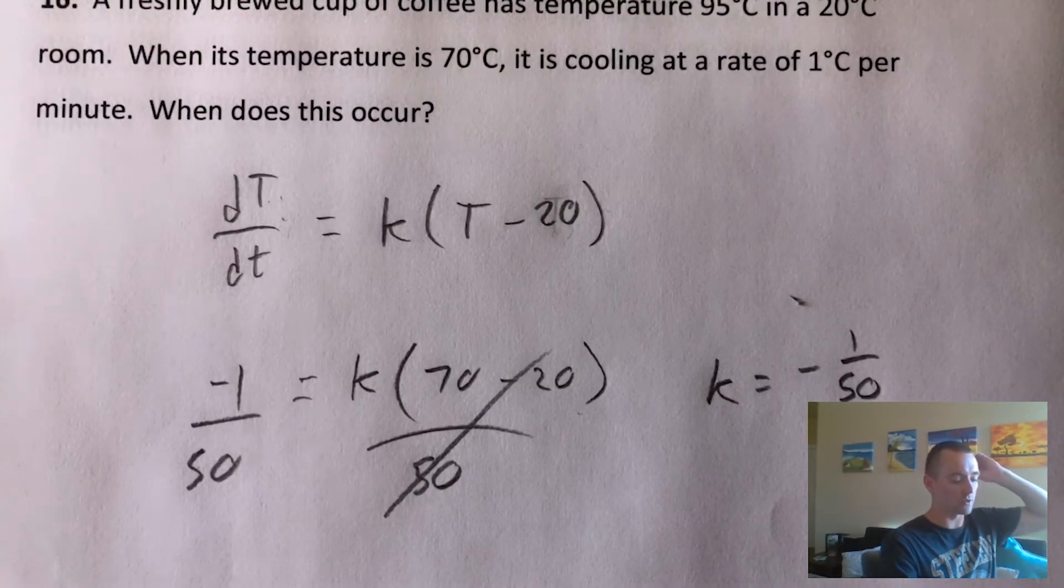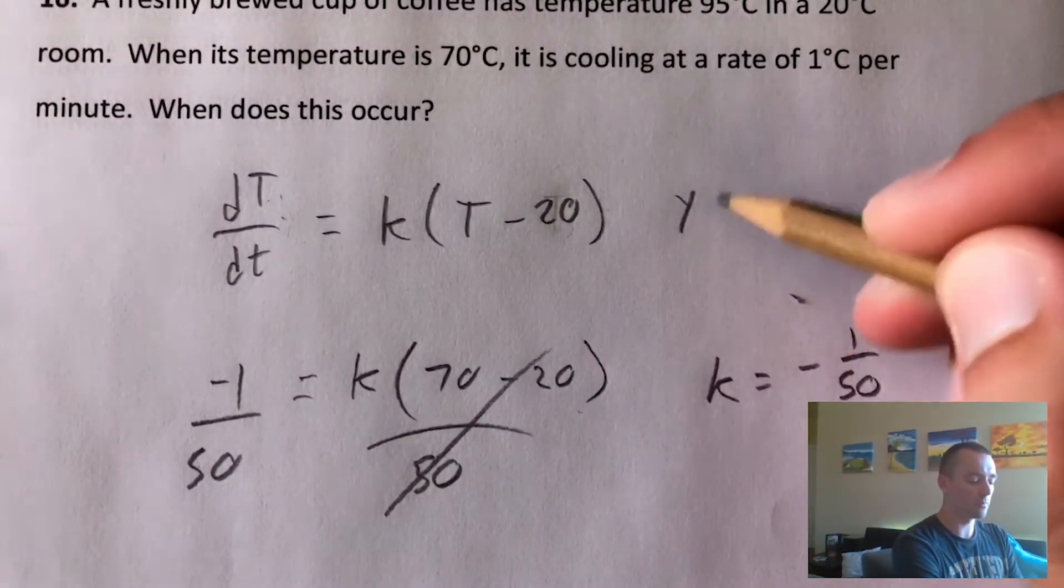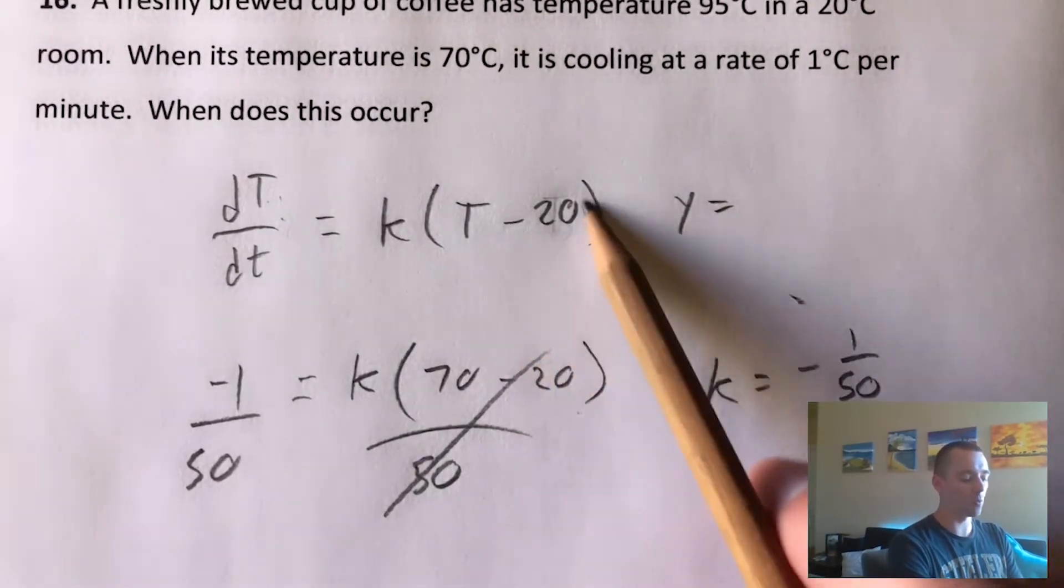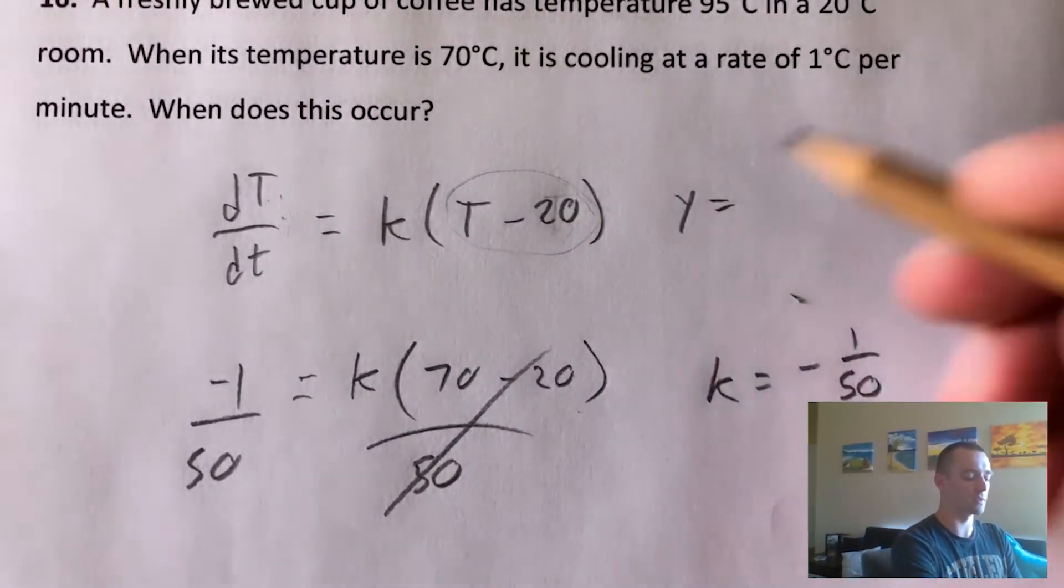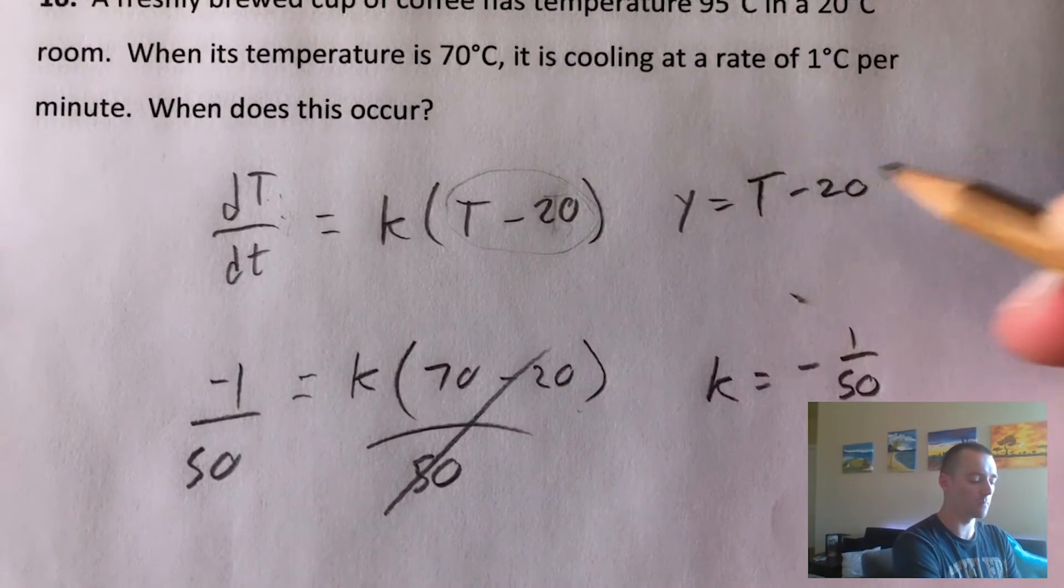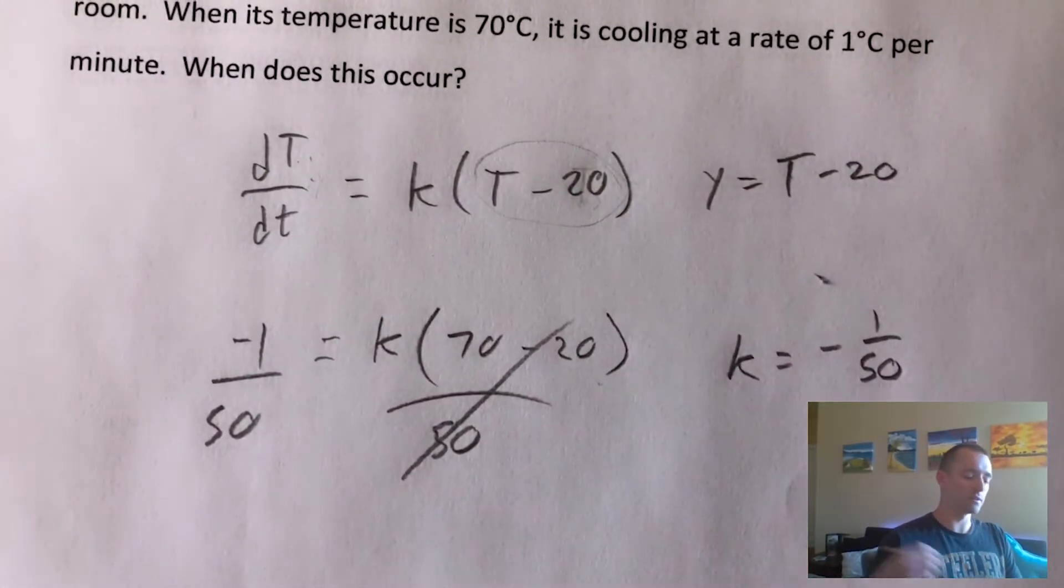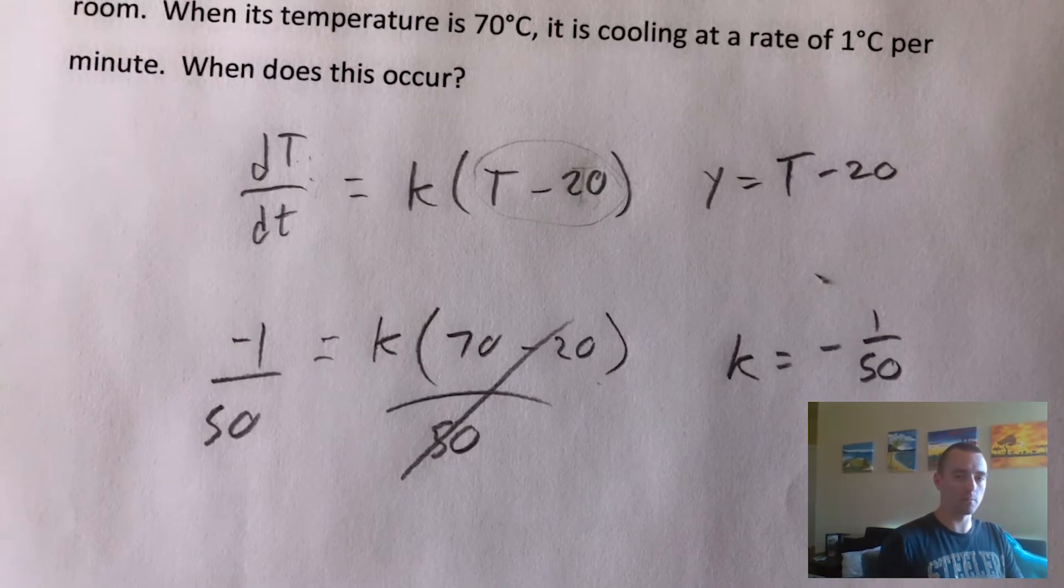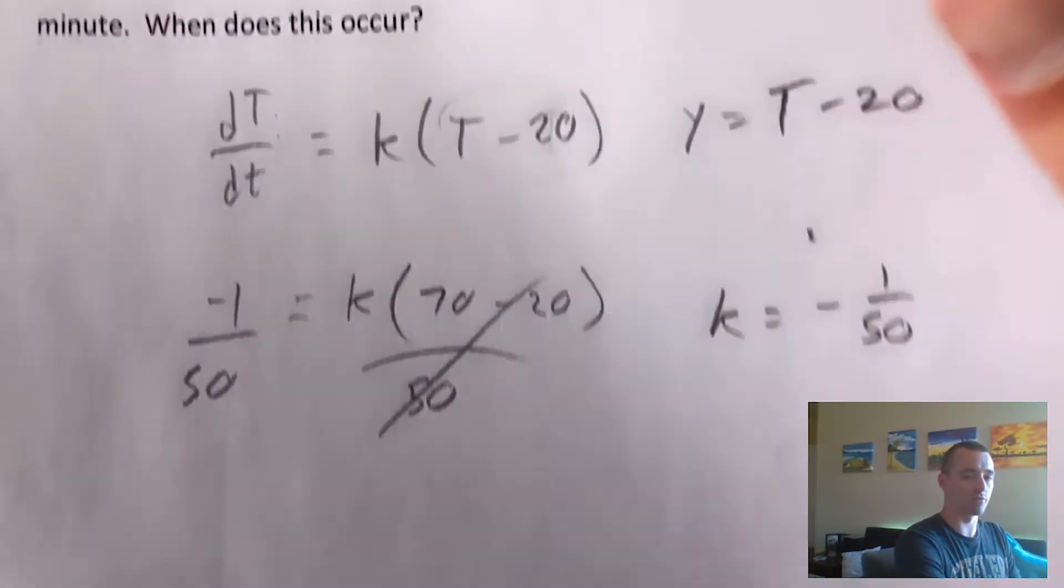But the cool thing is we already know this constant K. So what we can do is introduce a new variable. We'll say this new variable is going to be called Y. And you just want to make it whatever this is in the parentheses here, so in this case, T minus 20. The reason we can do this is now this tells us a new initial value problem that we can create...